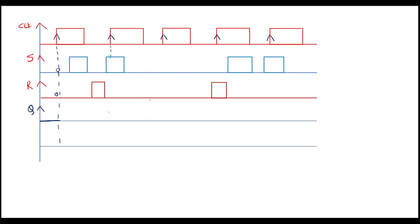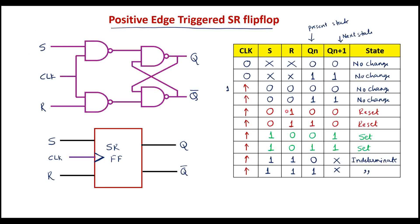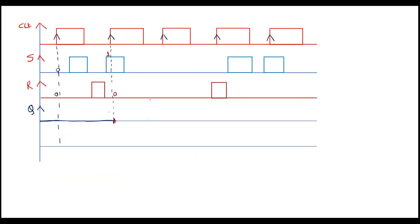At the next positive clock edge, we can observe that the S input is 1 and R is 0. When S is 1 and R is 0, the flip-flop will be in the set state — the flip-flop output will go high. It will go high at this moment and remain high until the next clock edge.